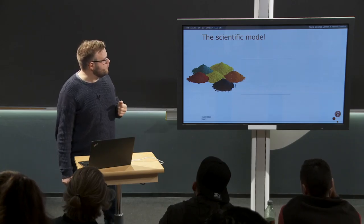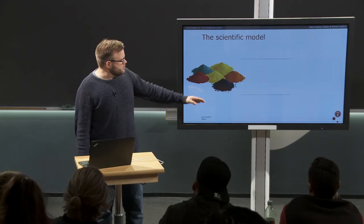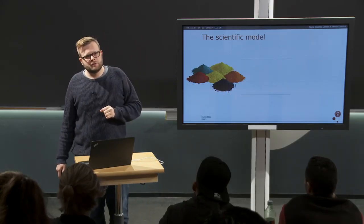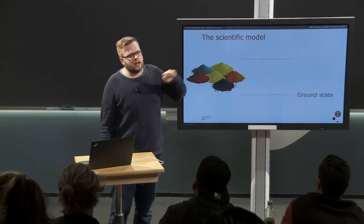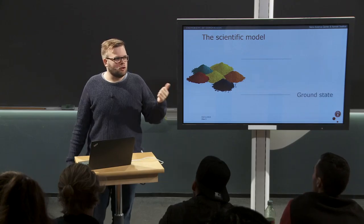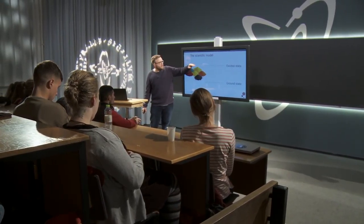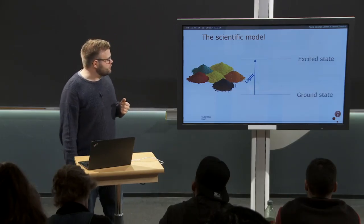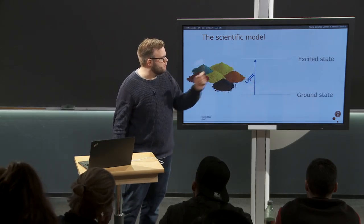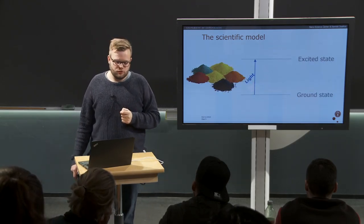If we look to the scientific model of how dye molecules and light interact, we describe the molecules by two lines. Either the molecules are in the ground state — which is the natural, low energy state of a molecule — or they are in the excited state, which is the state a molecule goes to when it has absorbed a photon. So the absorption process is described as a transition taking the molecule from the ground state to the excited state.